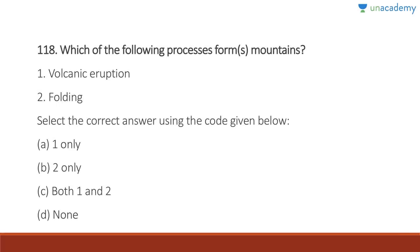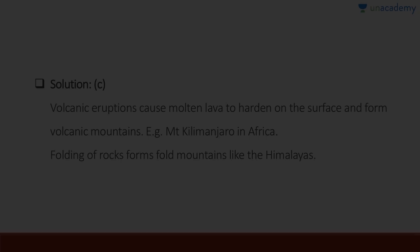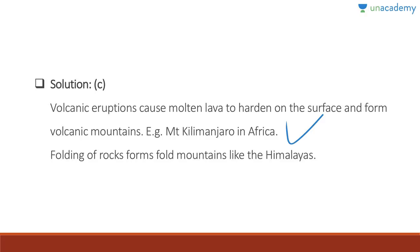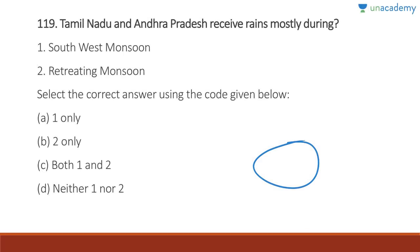Question 118: Which processes form mountains? Volcanic eruption leads to mountain formation, and folding also leads to mountain formation — both correct. Answer is C, both one and two. Volcanic eruption causes molten lava to harden on the surface and form volcanic mountains, for example Mount Kilimanjaro in Africa. Folding of rocks forms fold mountains like the Himalayas.